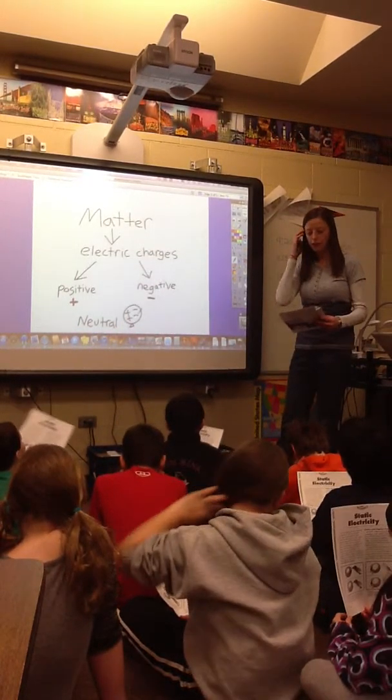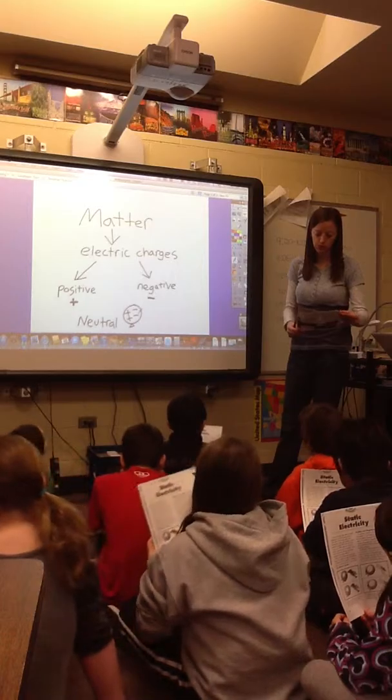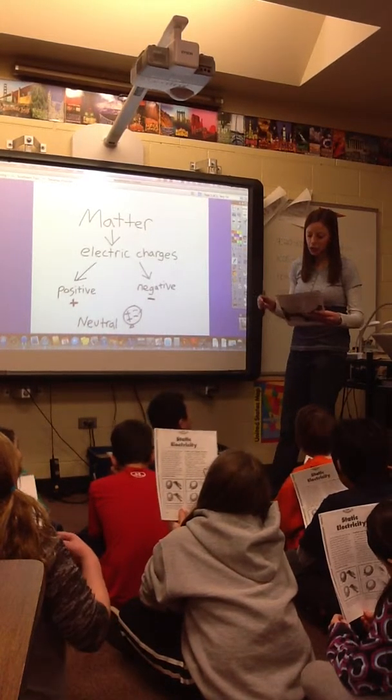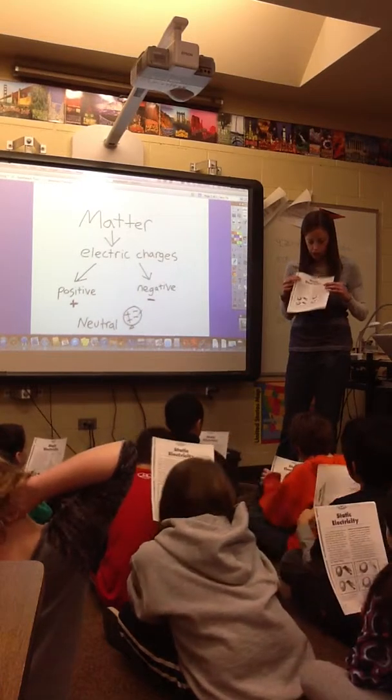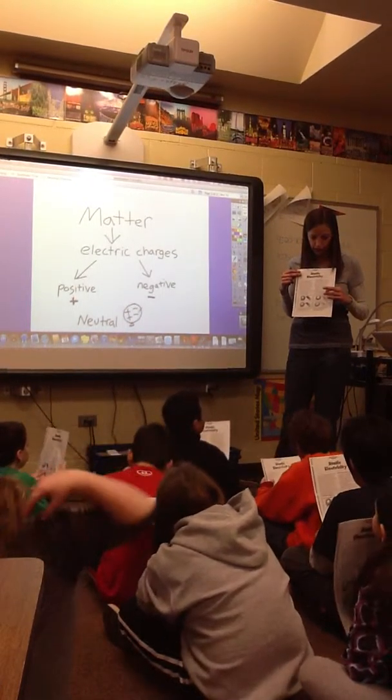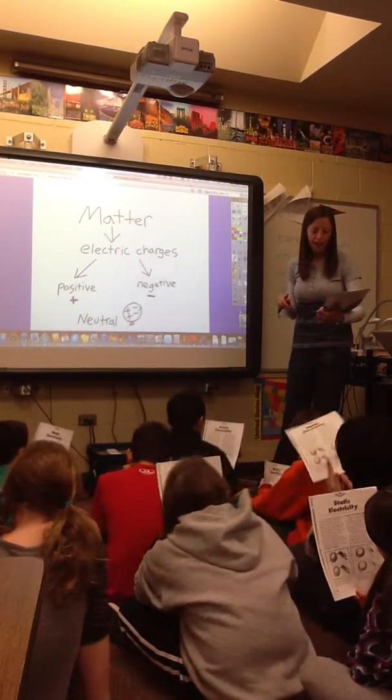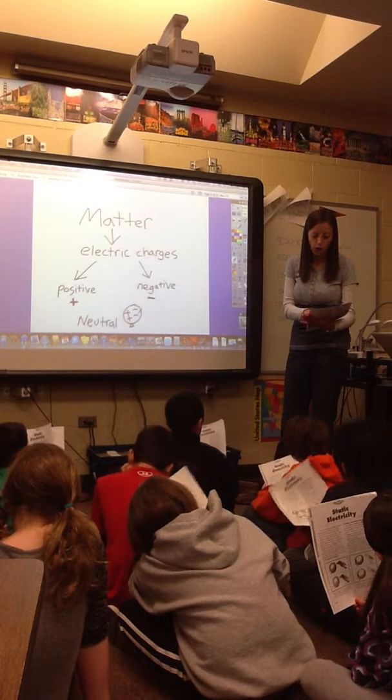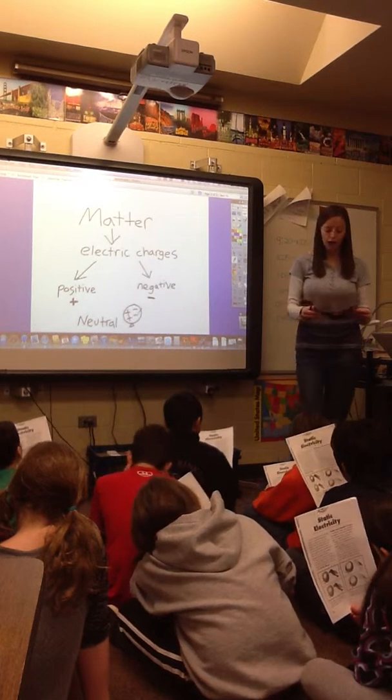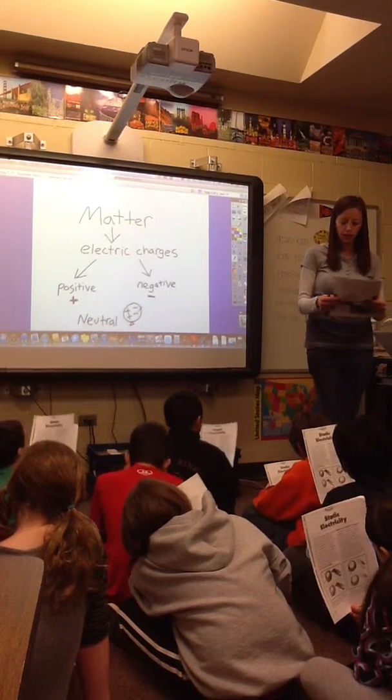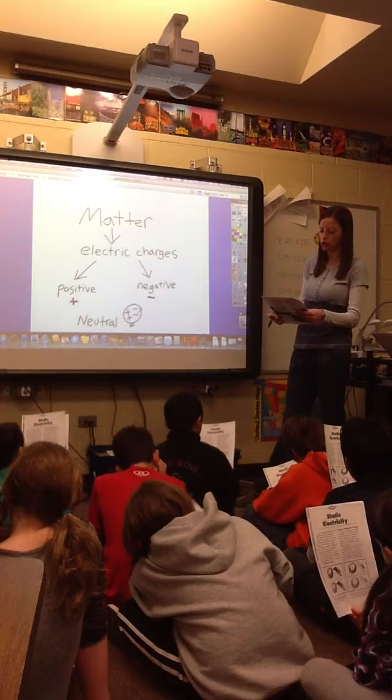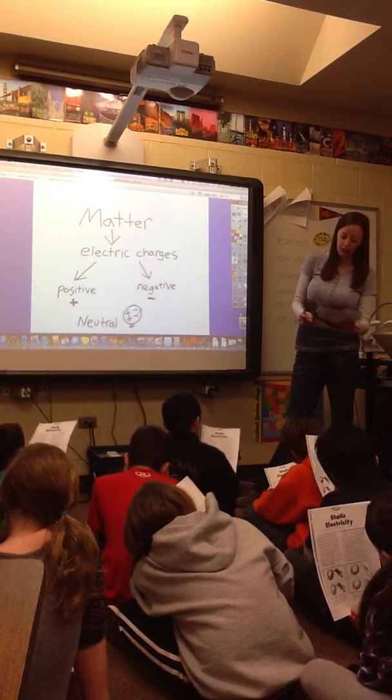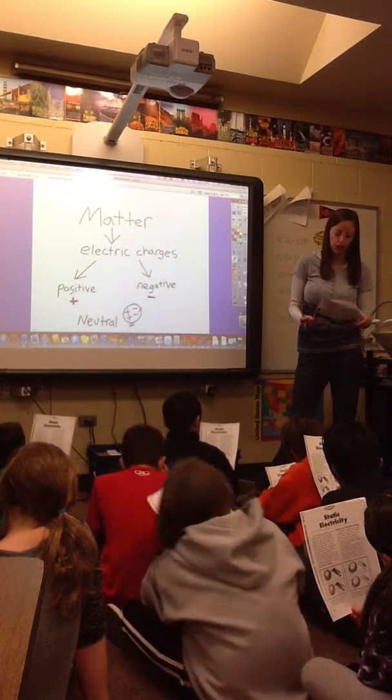Paragraph 2 in column 2. If negative charges move from one neutral object to another, the first object then has an overall positive charge and the second one has an overall negative charge.